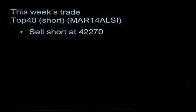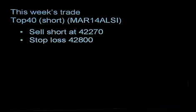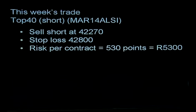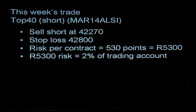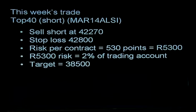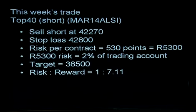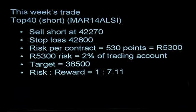It's the March 2014 All Z40 contract that I'm shorting, done at 42,270. My stop loss is 42,800. My risk per contract is 530 points, which equates to 5,300 RAND — that is more or less 2% of the value of our trading account. I'm looking for a move down to 38,500, which means my risk-to-reward ratio on this trade is 1 to 7.1. It's quite a healthy risk-to-reward ratio, and I think I'll probably need to hold this for a while. This is a trade we could potentially sit on for some time.